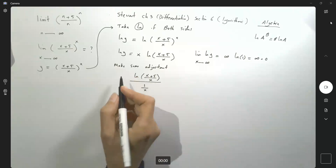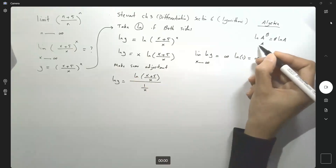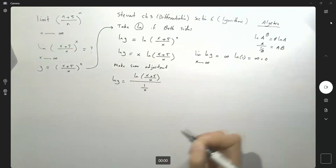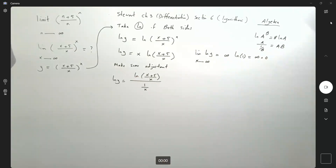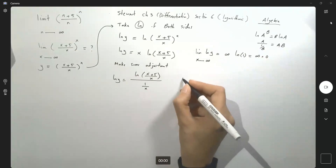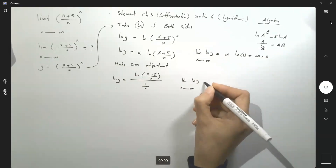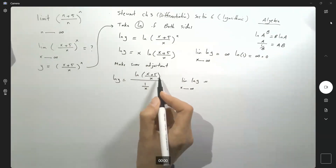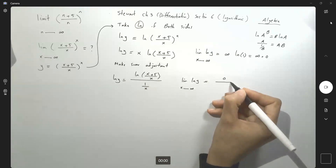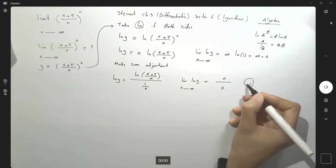So ln of y can be rewritten as ln of (x + 5)/x over 1/x. This is pure algebra — if you have a divided by 1/b, it equals a times b. Now take the limit again: the limit of ln y as x approaches infinity becomes ln of 1, which is 0, divided by 1 over infinity, which is also 0. So we have a 0/0 form — we can apply L'Hôpital's rule.